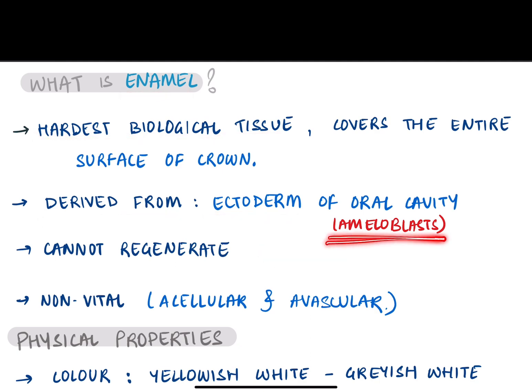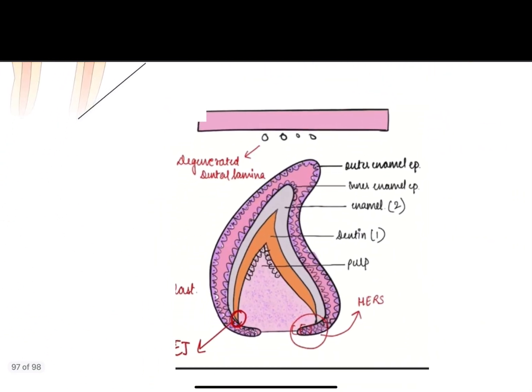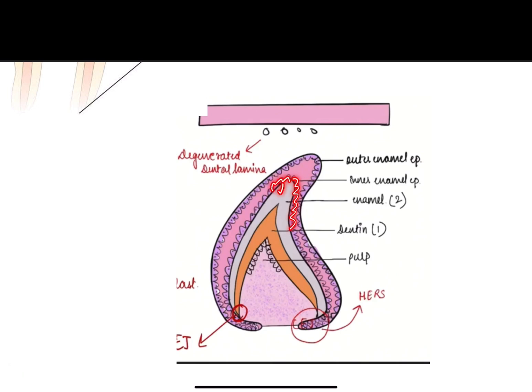The cells that secrete enamel are called ameloblasts. As seen in previous videos, these ameloblasts secrete enamel inside of them.